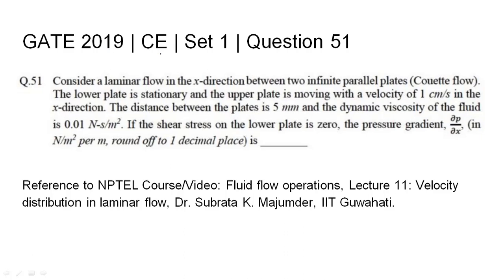GATE 2019 Civil Engineering Set 1, Question 51. Consider a laminar flow in the x-direction between two infinite parallel plates. The lower plate is stationary and the upper plate is moving with a velocity of 1 centimeter per second in the x-direction. The distance between the plates is 5 millimeters and the dynamic viscosity of the fluid is 0.01 Newton-second per meter square. If the shear stress on the lower plate is zero, the pressure gradient dP/dx in Newton per meter square per meter, rounded off to one decimal place, needs to be found.